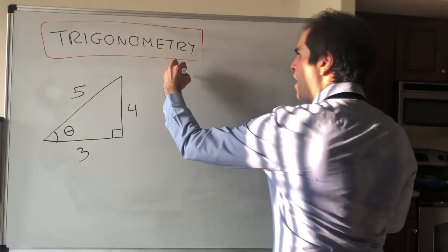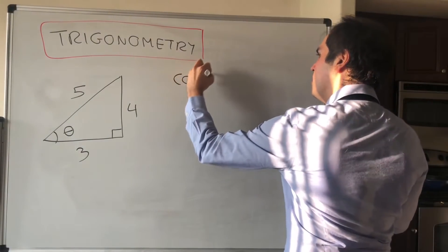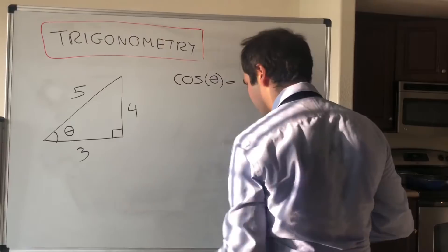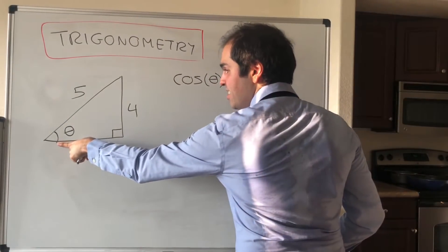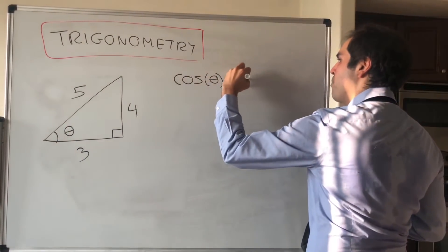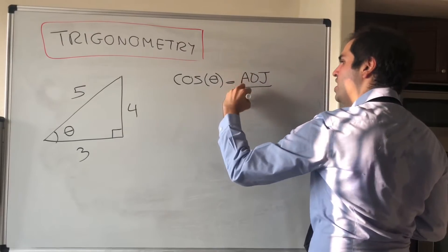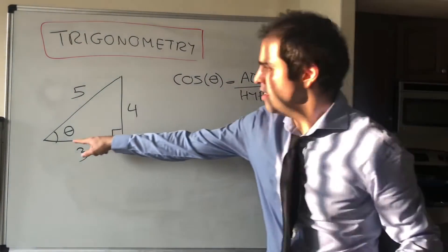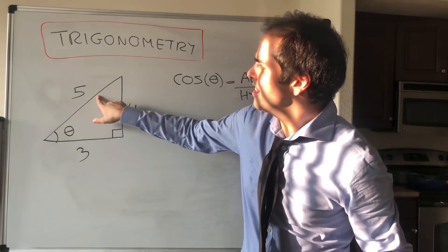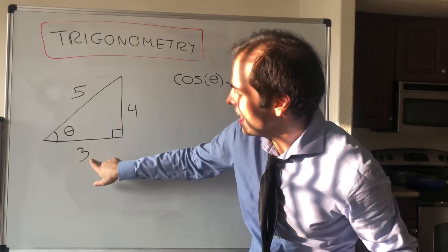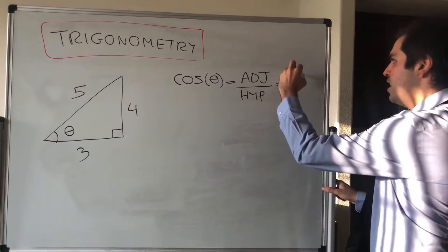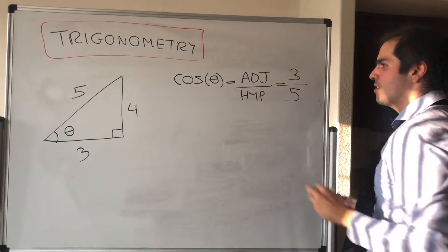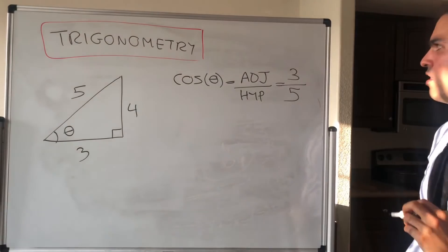The most important one, in my opinion, is cosine. So cosine of theta — what is it? It is the adjacent side divided by the hypotenuse. Adjacent means the side that's not the hypotenuse but is next to it. So here 3, and the hypotenuse is 5. So cosine would be 3/5.